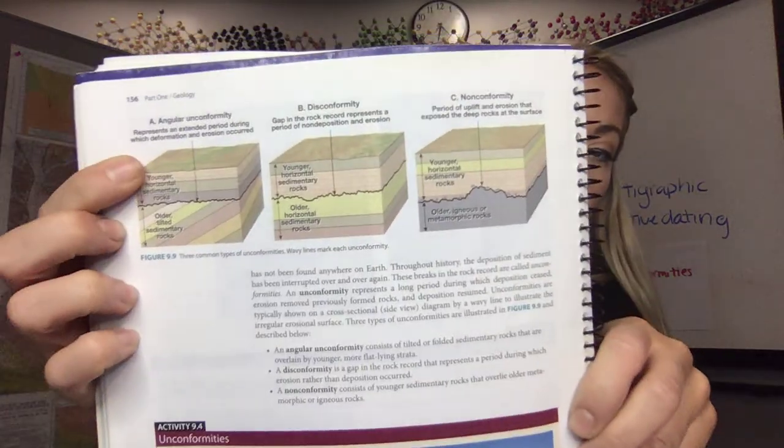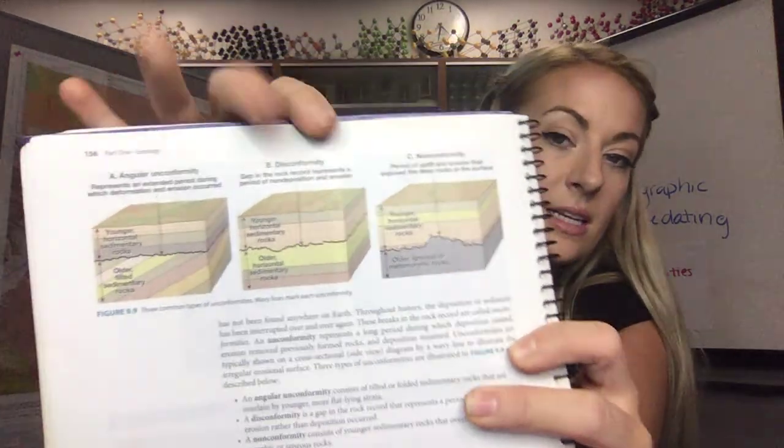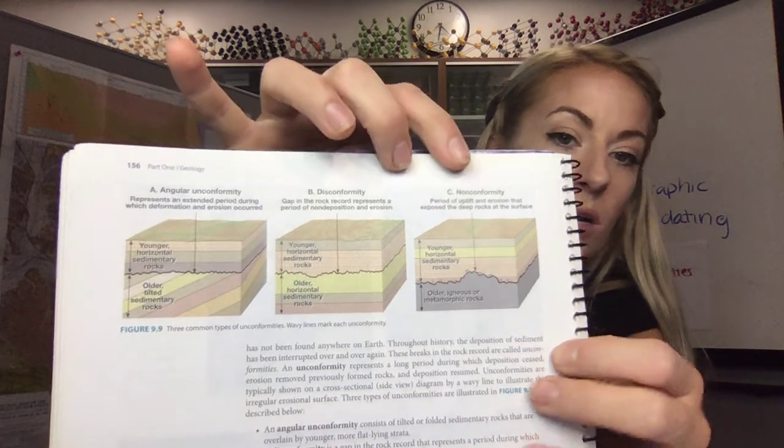Our three main types are angular unconformity, disconformity, or nonconformity.